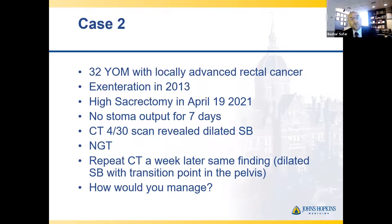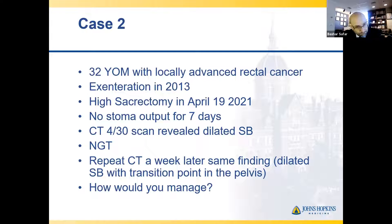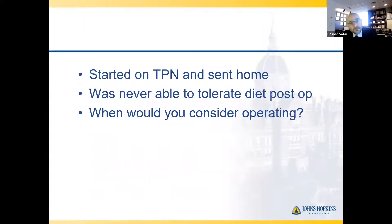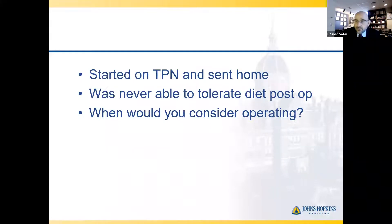The other case I wanted to discuss is a 32-year-old male who had locally advanced rectal cancer. He had an exenteration at Johns Hopkins in 2013, then had a recurrence, and in April of this year had a high sacrectomy. After that operation, within seven days he had no bowel function. A CT scan around day 11 showed dilated small bowel. He had an NG tube and did not open up, and another CT scan showed a transition point in the pelvis. How would you manage this?